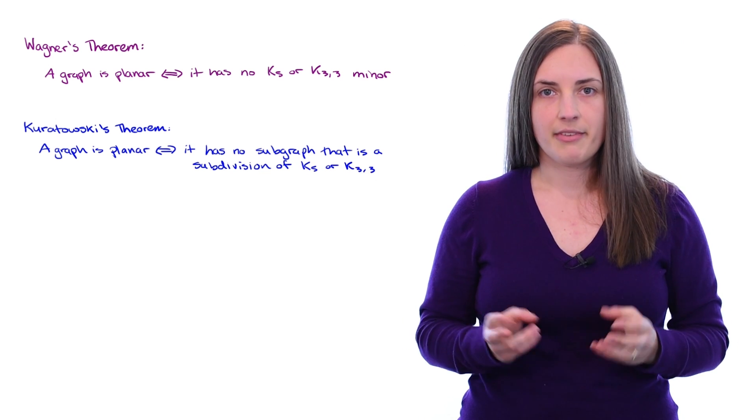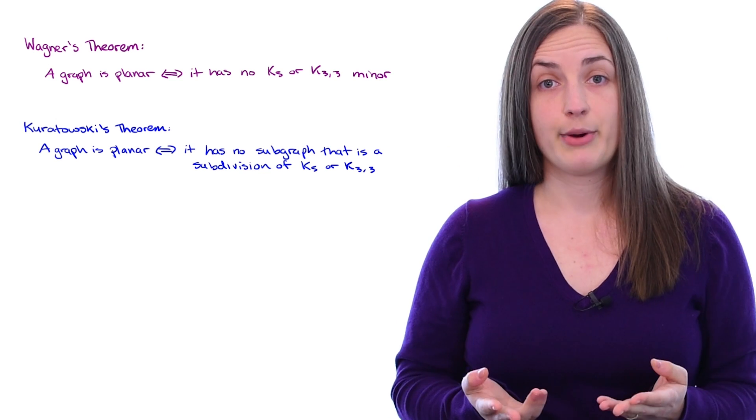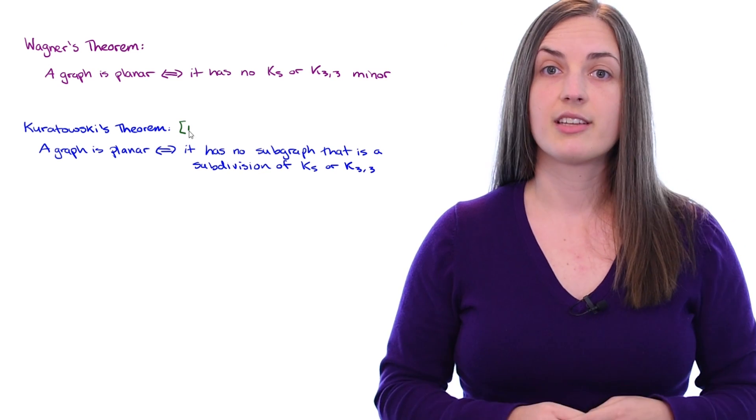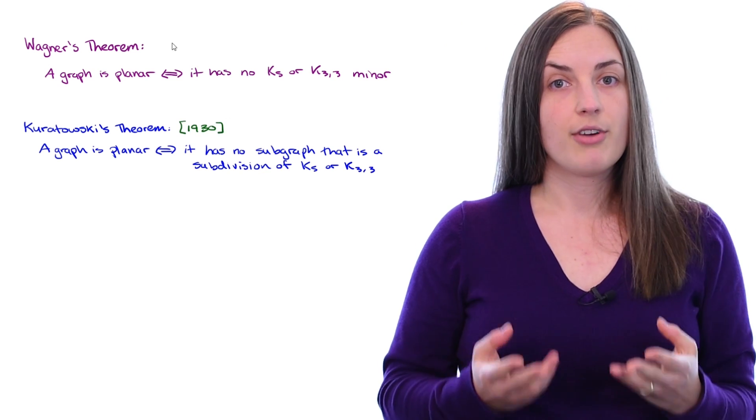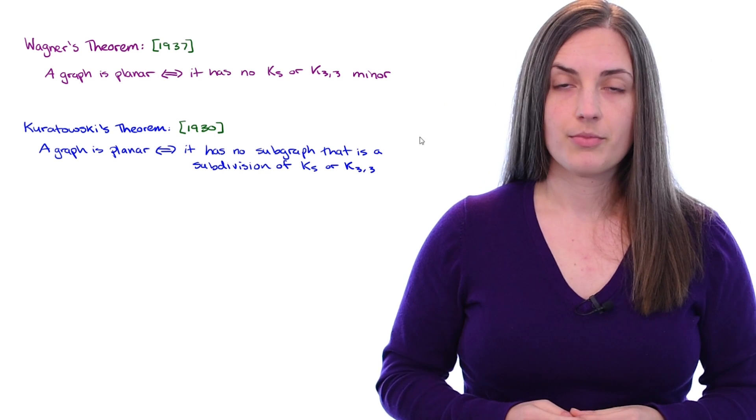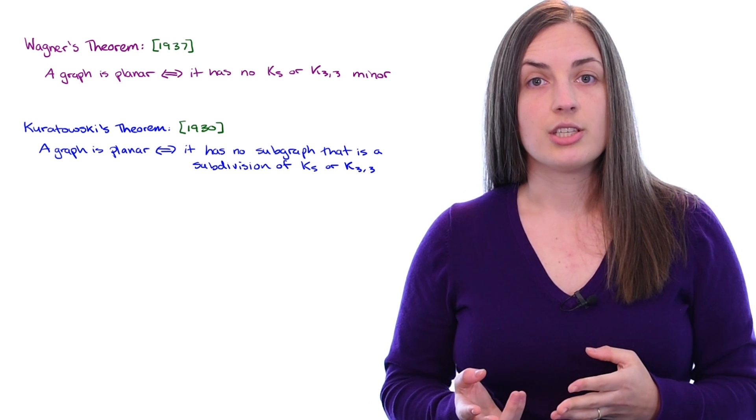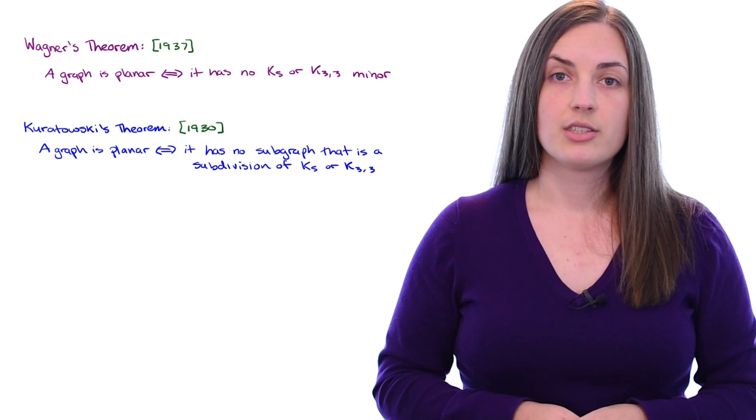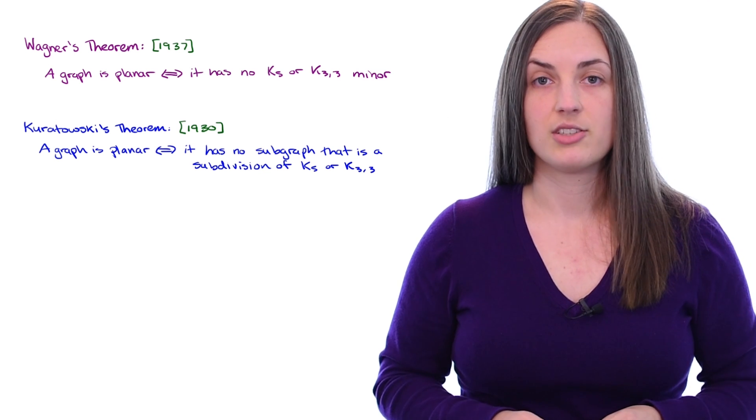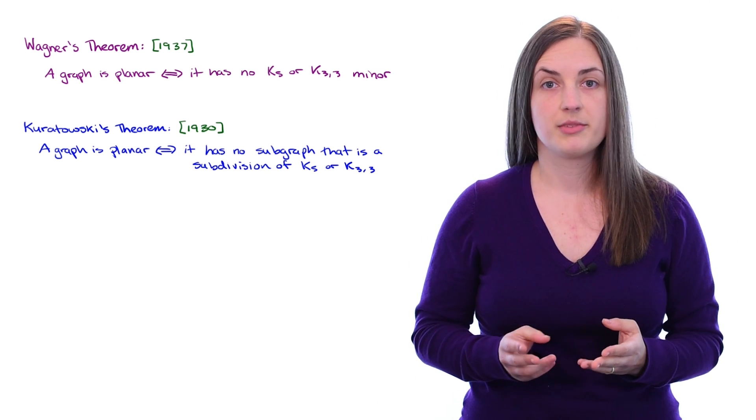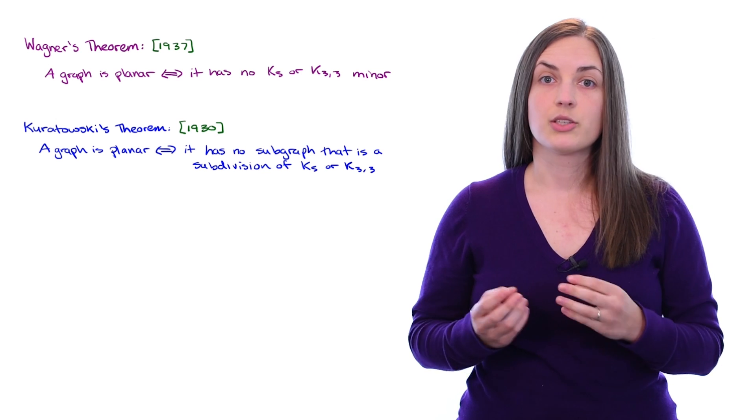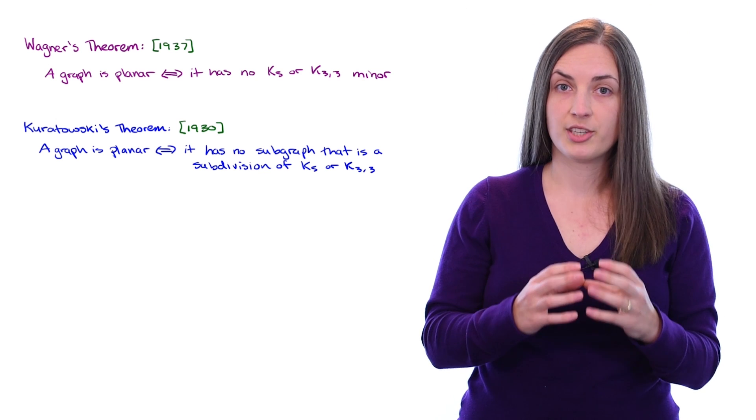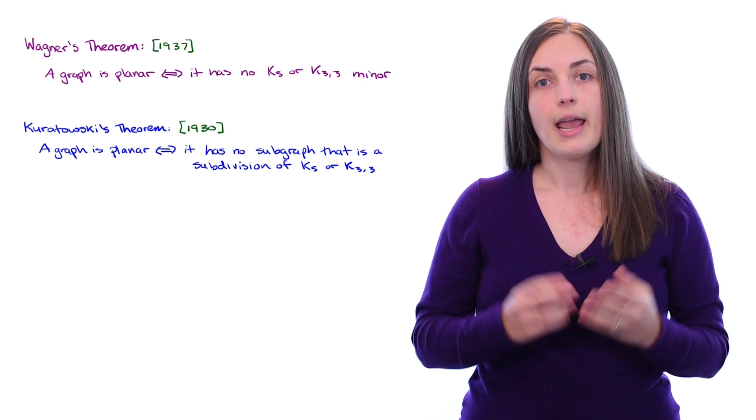Obviously K5 and K33 are the key parts here. If we'd like to compare these two theorems, the first thing to notice is that Kuratowski proved his theorem in 1930 and Wagner proved his theorem in 1937. There are certain situations where Wagner's theorem may be more easy or appropriate to use, and other situations where Kuratowski's theorem may be easier or more appropriate. Wagner's theorem deals with minors and Kuratowski's theorem deals with subdivisions.